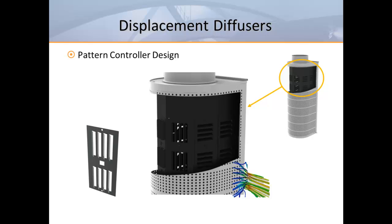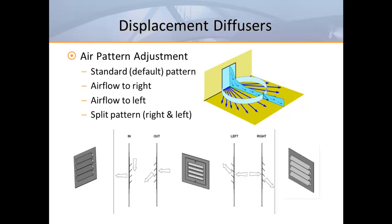At this point you may begin to wonder why adjustable diffusers are recommended at all. The answer is easy — adjustable diffusers are recommended because of the adjacent zone. It's important to provide some means of fine tuning the air pattern. As anyone in the construction industry knows, things don't always work out perfectly and sometimes spaces change purpose. For these reasons, adjustable diffusers are recommended to accommodate changes in room layout or seating locations.